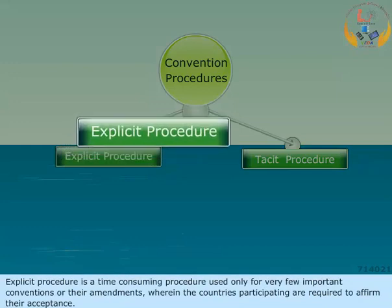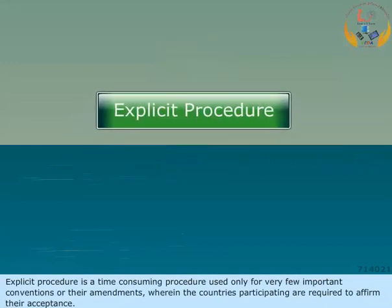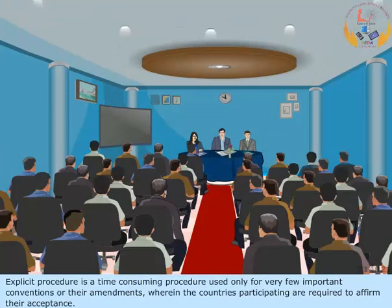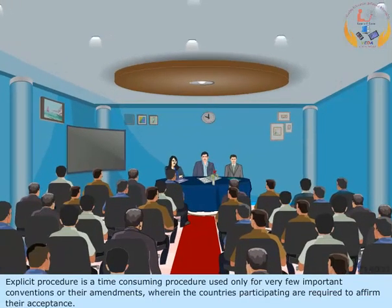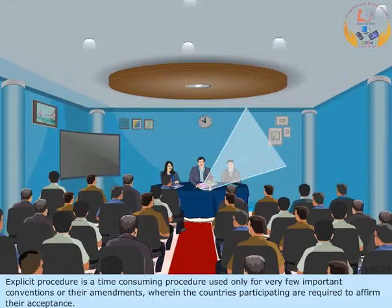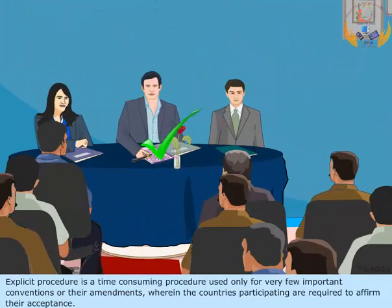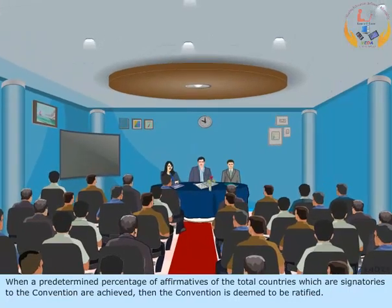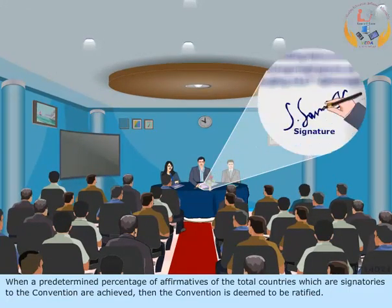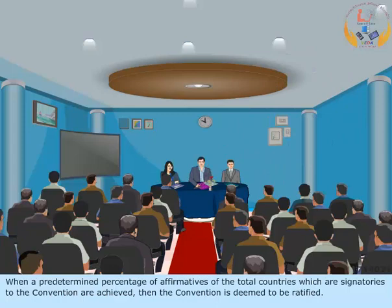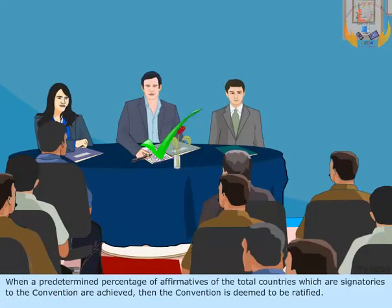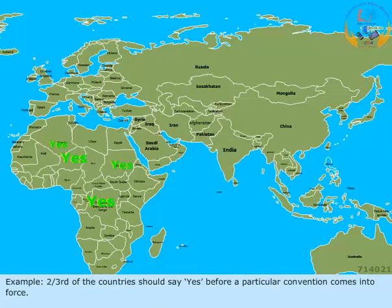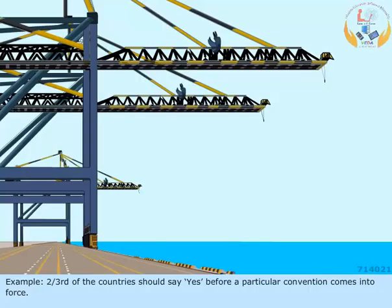Explicit Procedure is a time-consuming procedure used only for very few important conventions or their amendments, wherein the countries participating are required to affirm their acceptance. When a predetermined percentage of affirmatives of the total signatory countries is achieved, the Convention is deemed to be ratified. For example, 2/3 of the countries should say YES before a particular Convention comes into force.